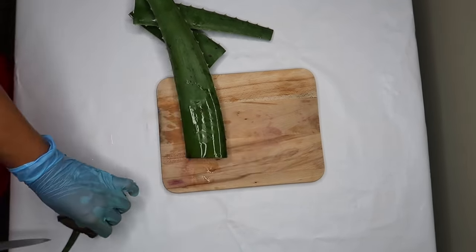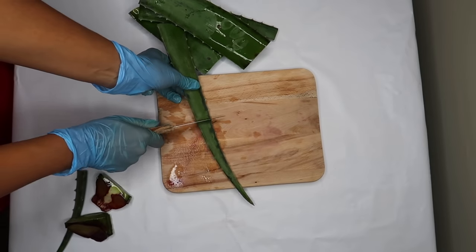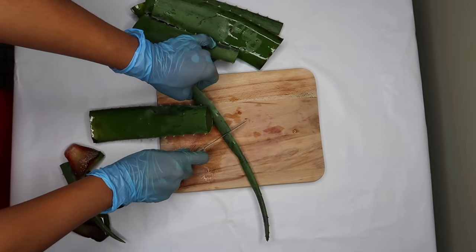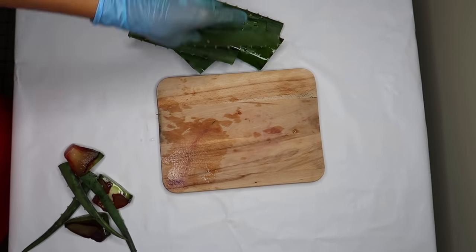After collecting my aloe vera leaves, I let the yellow latex flow out of the ends and wash them with tap water. Then I cut the extremities of each leaf as you can see here.